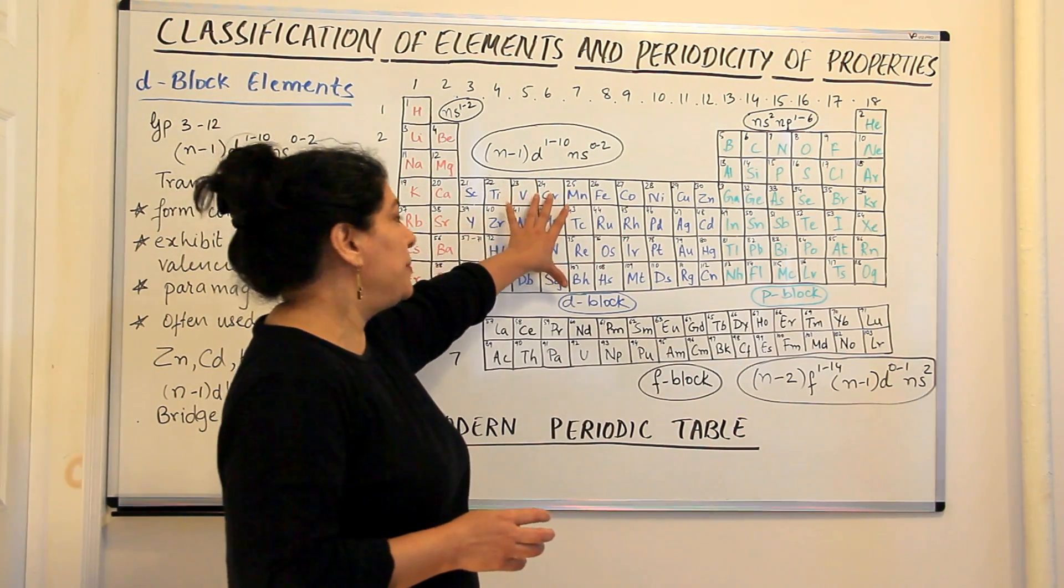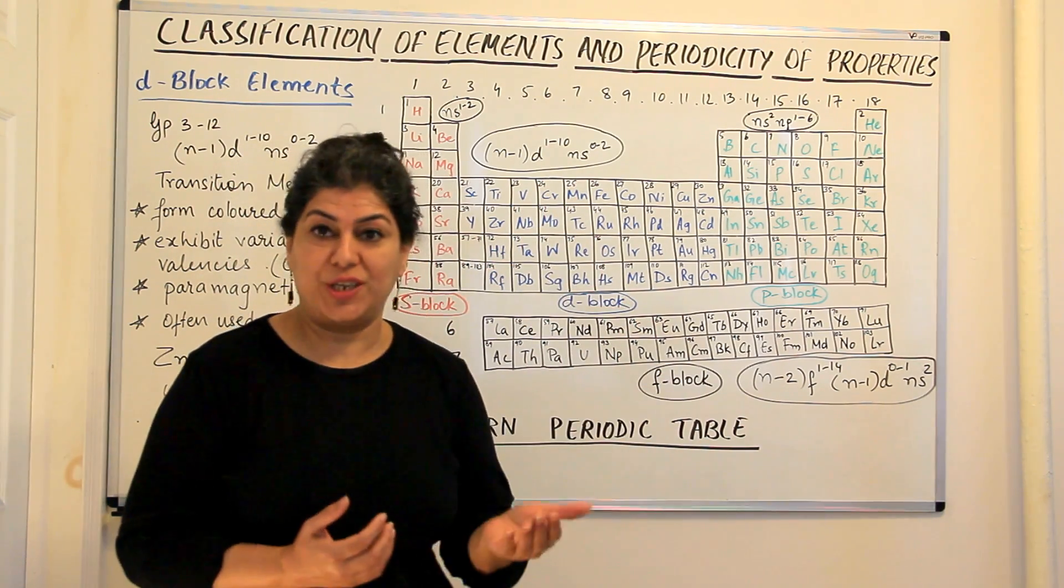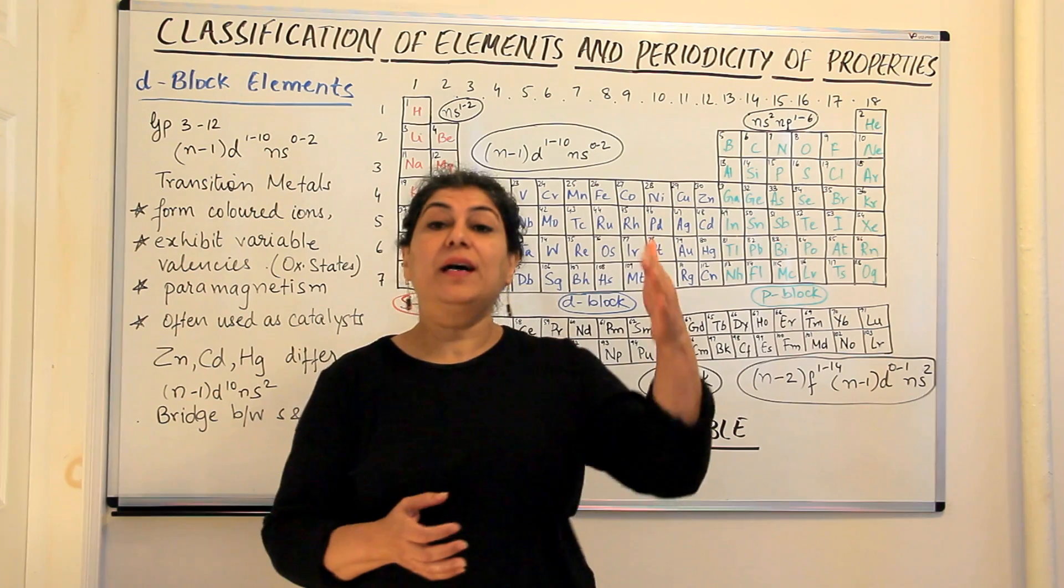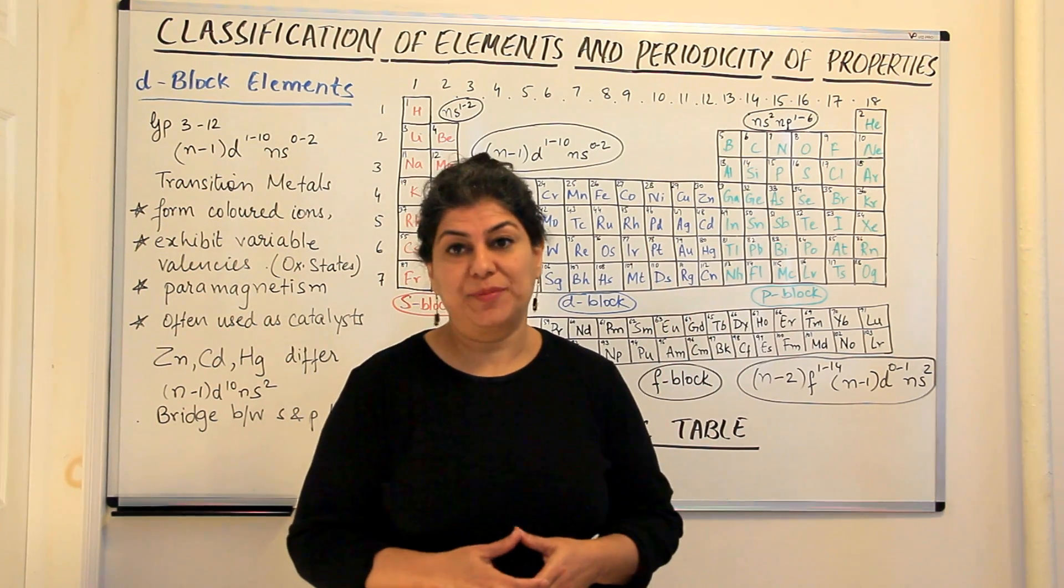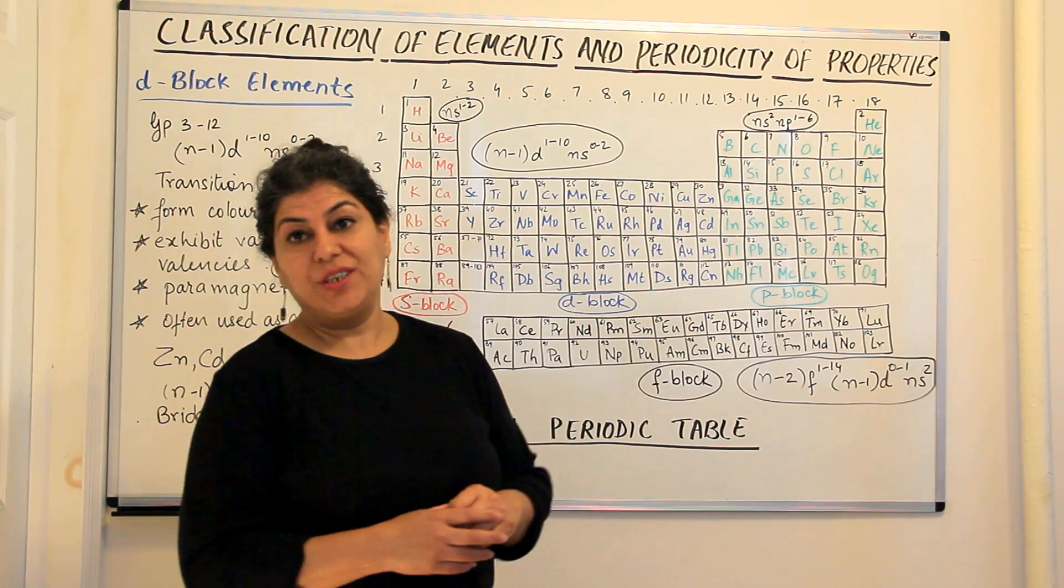In the D block, it's the penultimate shell which fills up and in F block elements it is the inner penultimate shell that fills up. And the outermost shell is known as the ultimate shell. So let us see what are these transition elements.